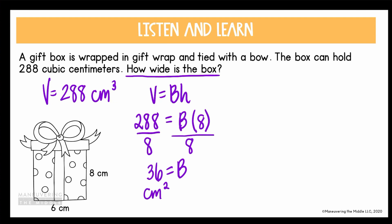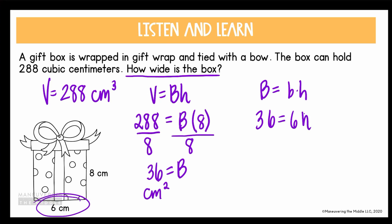Now, is that what the question asked? It's really easy to stop there, but when I go back to the question, it tells us it wants us to find out how wide the box is. So I'm going to go back and I know that capital B — the area of the base — is equal to base times height. From my picture, my base is 6, but I don't know the height — the width of the rectangle base. So I'm going to solve for H the same way, solving a one-step equation. I can see that 6 centimeters is equal to the height or the width of the box.